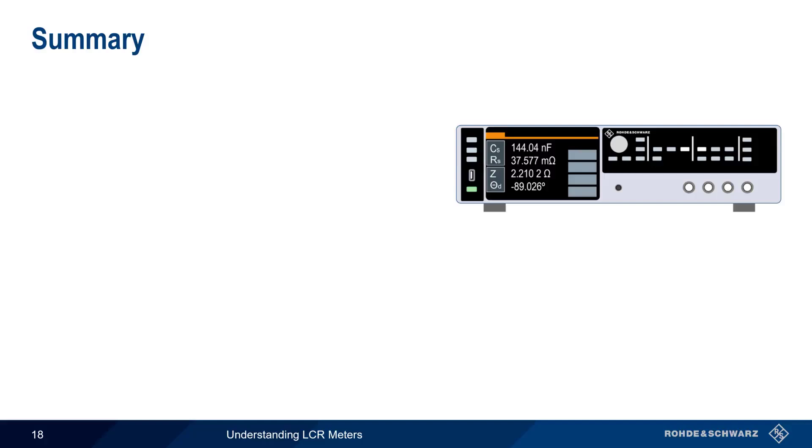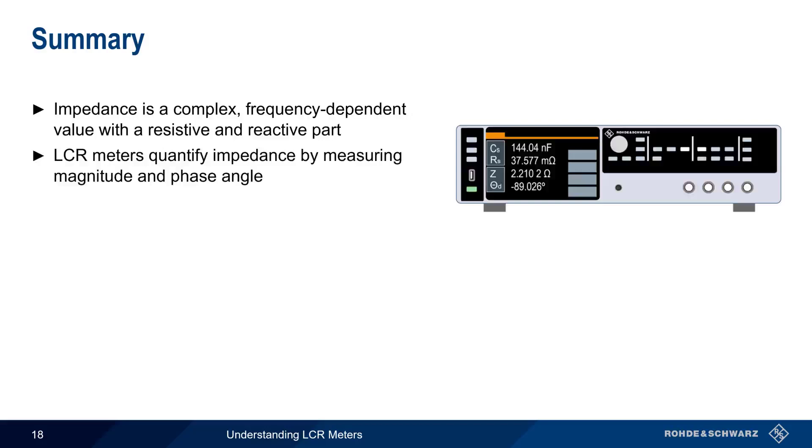Let's end with a brief summary. Impedance is a complex, frequency-dependent value, consisting of a resistive or real part and a reactive or imaginary part. LCR meters quantify this complex impedance by measuring the magnitude of the voltage and current and the phase angle between them. These impedances can then be easily converted into the basic quantities of inductance, capacitance and resistance, as well as into other useful parameters, such as the quality factor Q. LCR meters can also be used to perform a variety of transformer tests.